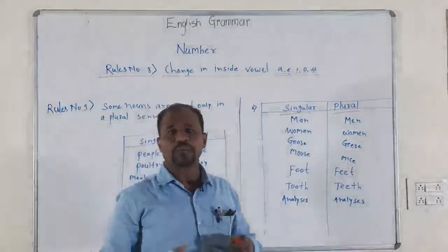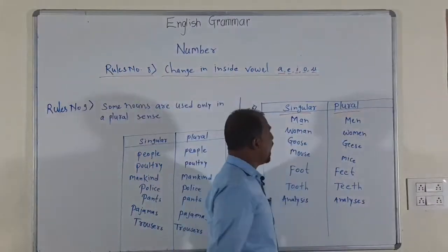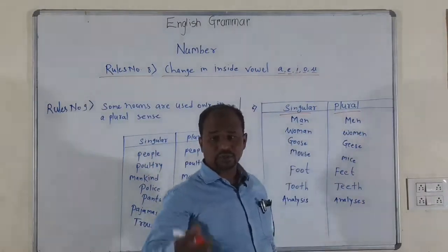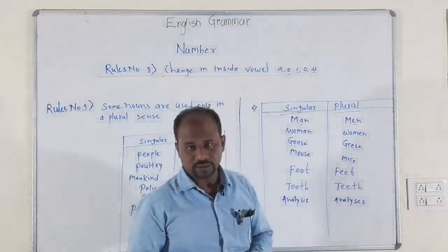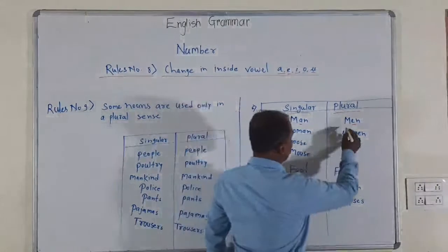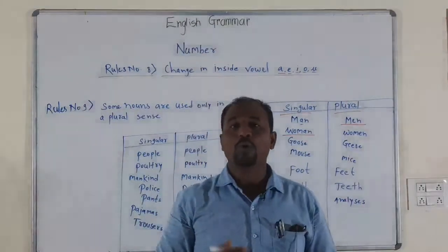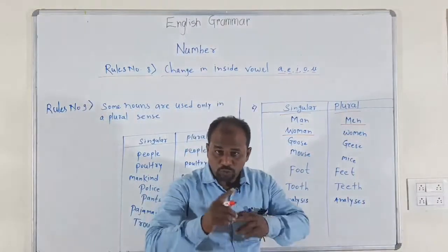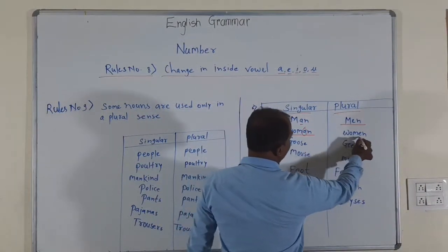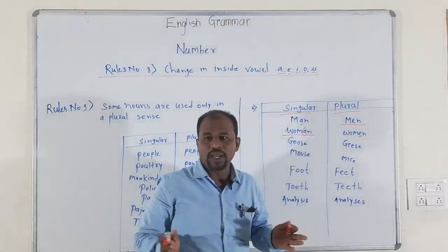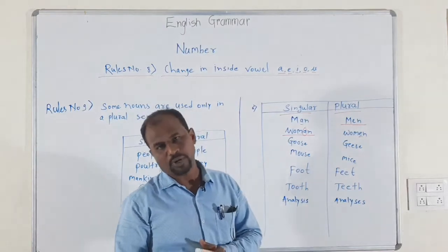When we have to use the plural form, the A is removed and we use E — A and E are both vowels. So man becomes men. Similarly, woman: we remove the A and use E, so woman is the singular form and women is the plural form.